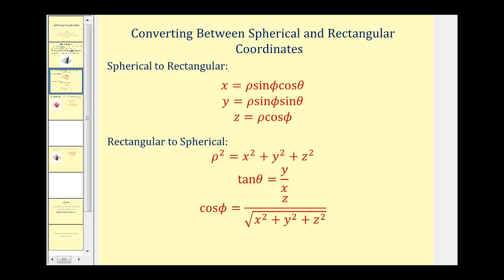Now we can use the following equations to convert between spherical and rectangular coordinates. Most of these come from using trigonometry, and one comes from the equation of a sphere. These three equations are often helpful to convert from spherical to rectangular coordinates, and these three equations are helpful when converting from rectangular to spherical coordinates.